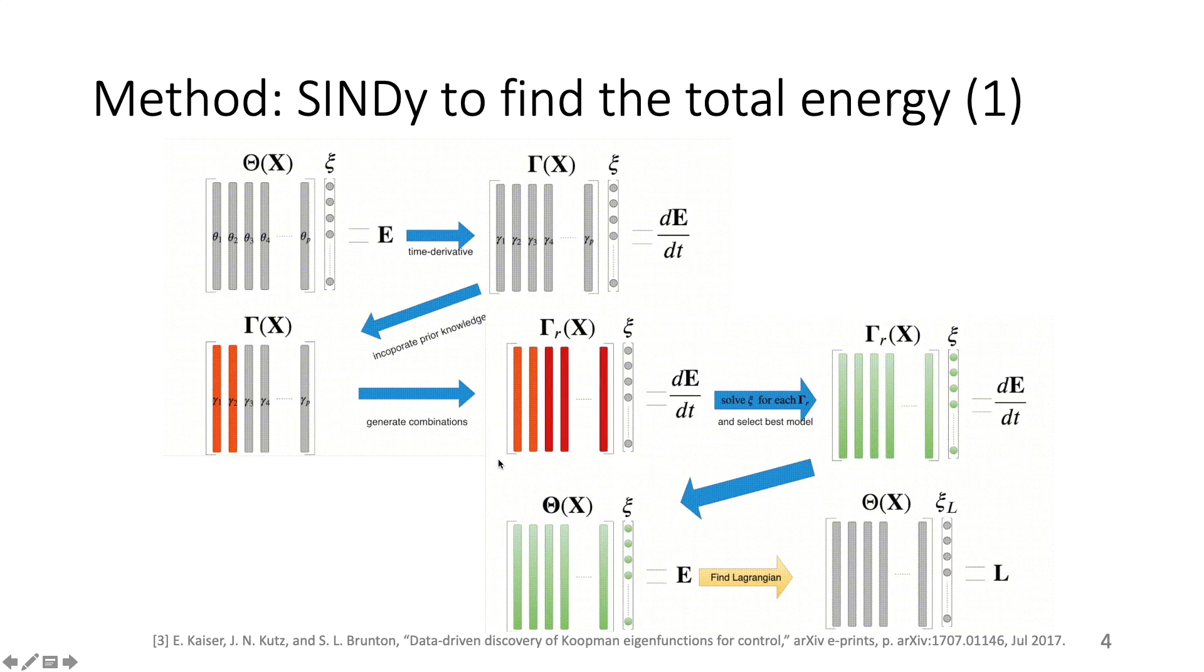This process is to incorporate prior knowledge and to ensure the sparsity of the solution. We then repeat the aforementioned process to obtain all possible reduced gamma, and solve the linear regression for c, and select the best model.